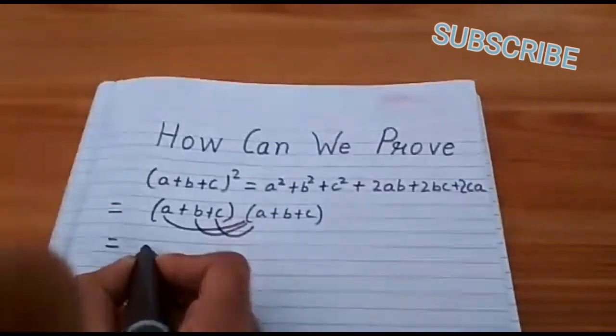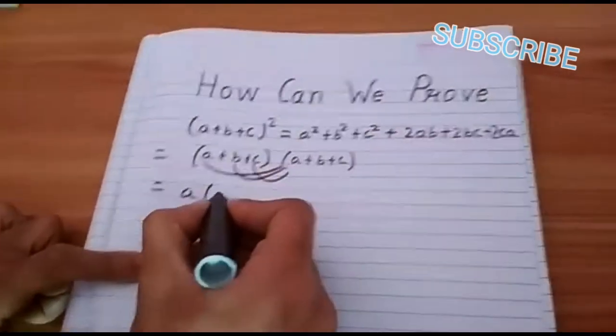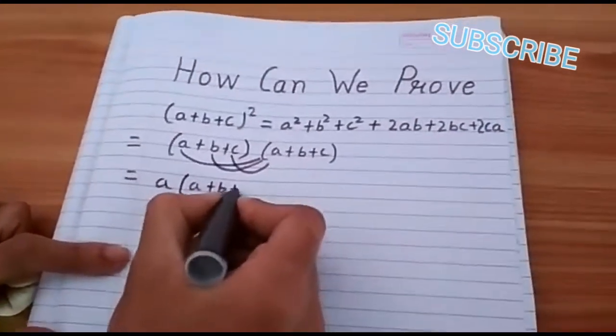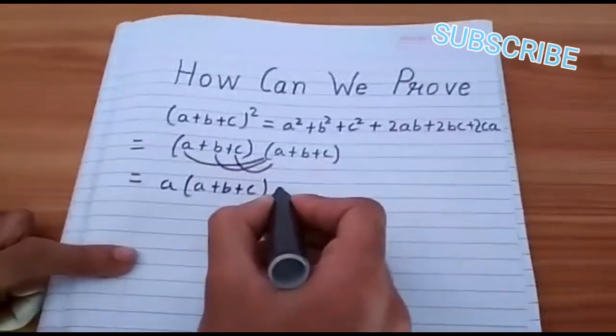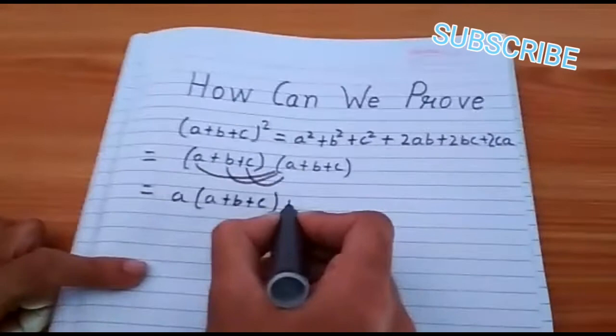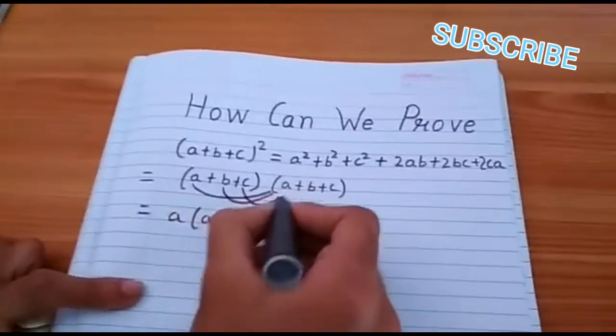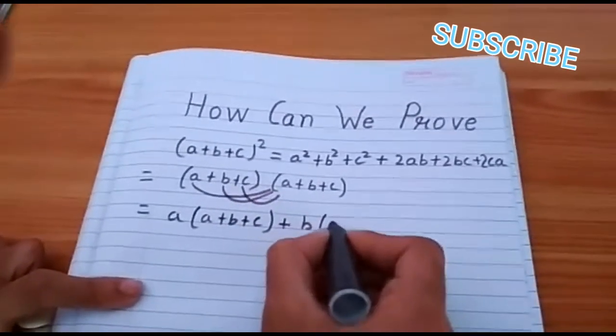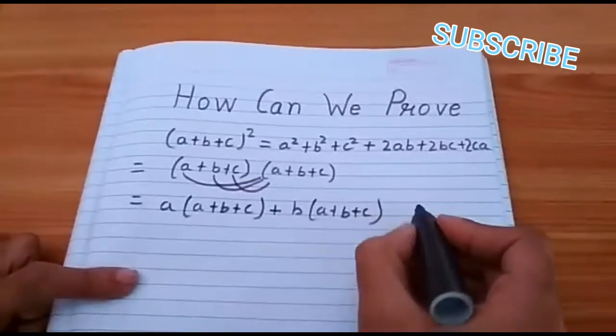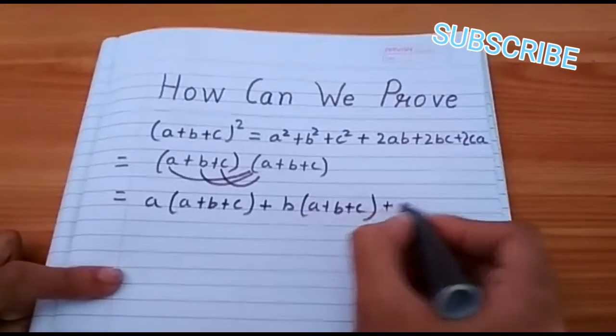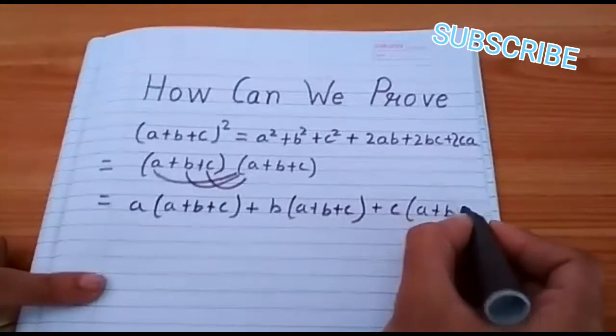So, here let us do first by a. Then give plus symbol. Then by b, multiply a+b+c. And then plus symbol. Then let us see a+b+c.